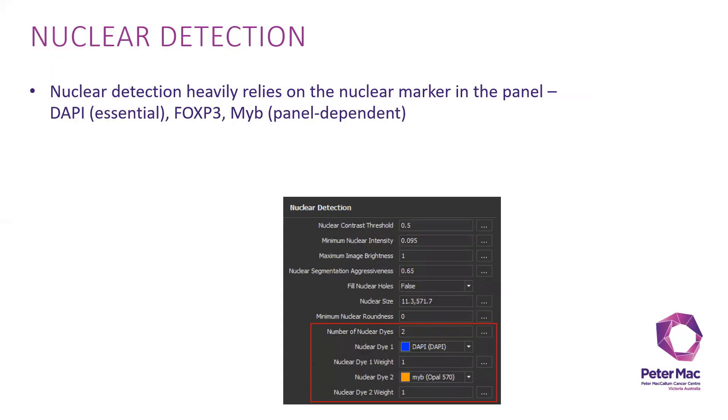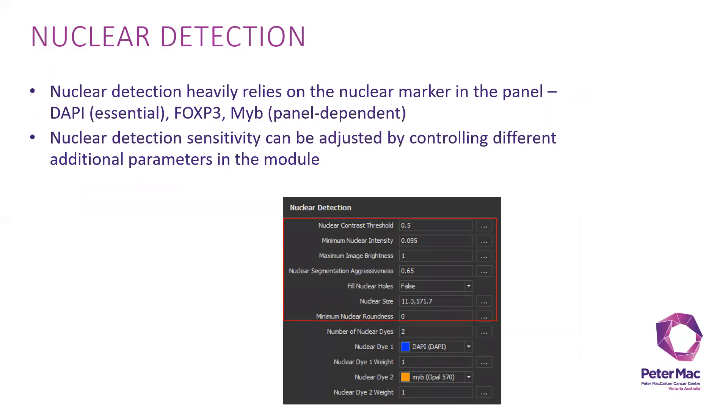In HALO, it relies heavily on the nuclear marker in the panel. Usually the essential marker is DAPI in your panel. Then you can have additional nuclear markers such as FOXP3 or MIB, which is really panel dependent. It has additional parameters to adjust the nuclear detection sensitivity in the module, which I will explain in the next slide.